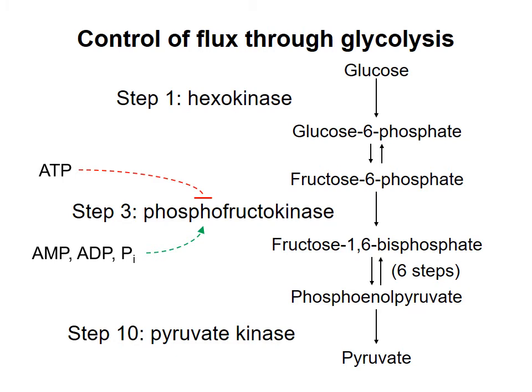Another regulator of phosphofructokinase is citrate, which allosterically inhibits the enzyme. Citrate is a metabolite in the citric acid cycle, which is another pathway used ultimately to make ATP. When the concentration of citrate increases, it means that movement of molecules through the citric acid cycle is slow, implying that demand for ATP is low. Therefore, the cell slows down glycolysis, which is used mainly to make ATP.